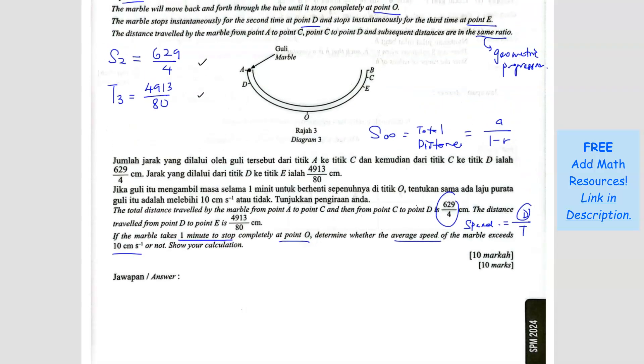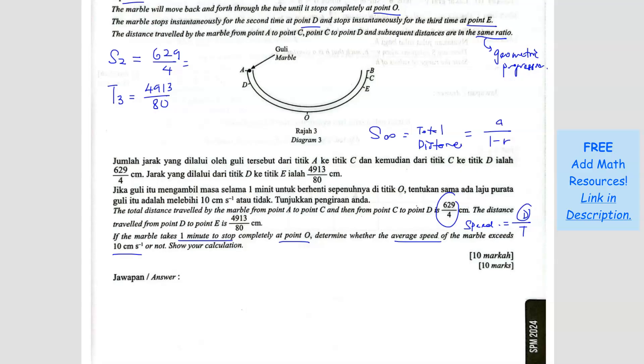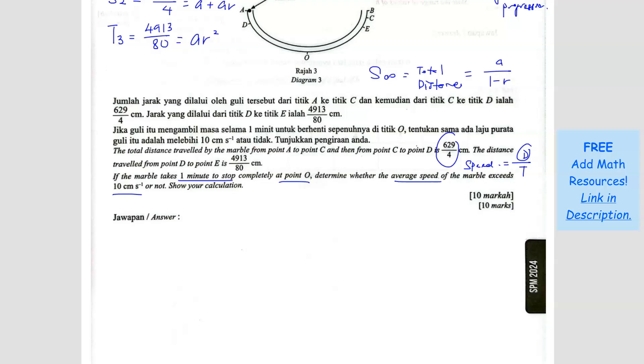The first one: we know that this is sum of the first two terms, so the first term is A, the second term is A times R. Whereas for the third term, it will be A R to the power 3 minus 1, which is power 2, AR square. So first equation is 4913 over 80 equals AR square. Then the second equation is 629 over 4 equals A plus AR. I'm going to make A the subject. So A equals 4913 over 80 R square, and substitute into the second equation: 629 over 4 equals 4913 over 80 R square.